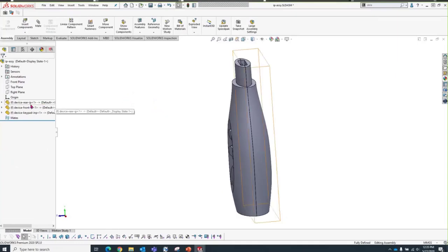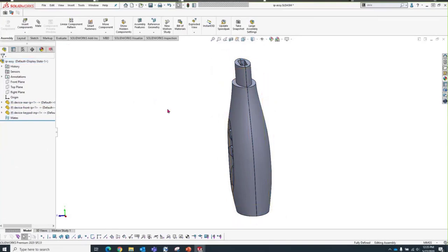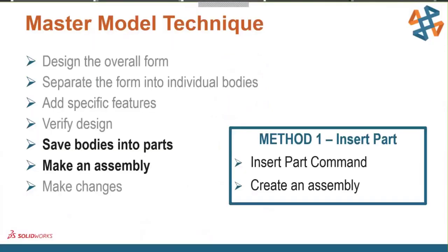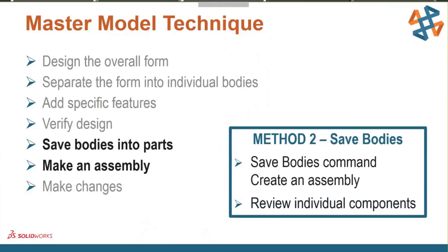That was Method One — Insert Part. We saved out our parts as individual components with intelligent names and assembled them. Now let's look at Method Two — the Save Bodies command. Save Bodies is a push method — it pushes bodies from the master model into individual parts, one body into one part. This method does create a time-based feature in the master model's feature tree. Any additional features added to the master model after the Save Bodies feature will not propagate to the child parts, so we must roll back the model to add features before the Save Bodies feature.